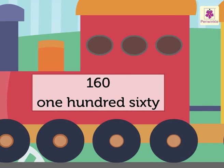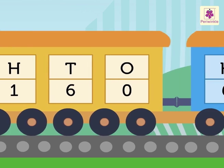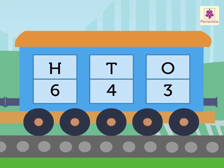hundred sixty. Now look at bogey two. It has the three-digit number 643, so the number name for